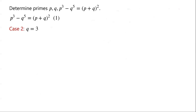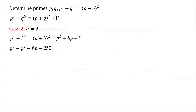Case 2: if q equals 3, then equation 1 becomes p cubed minus 3 to the power of 5 equals p plus 3 all squared. Expanding: p plus 3 all squared equals p squared plus 6p plus 9. Rearranging and simplifying, we have p cubed minus p squared minus 6p minus 252 equals 0. This is a cubic equation.